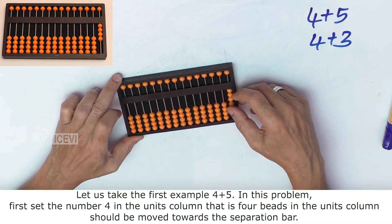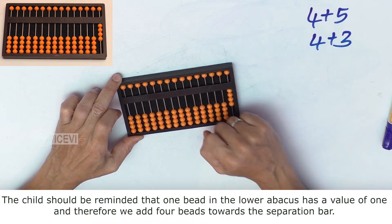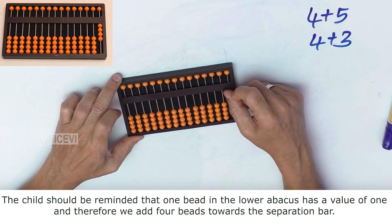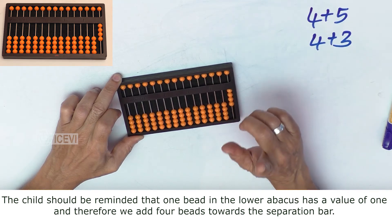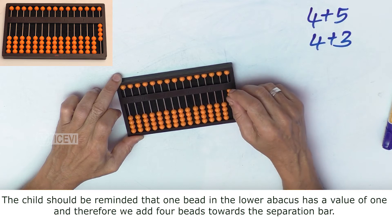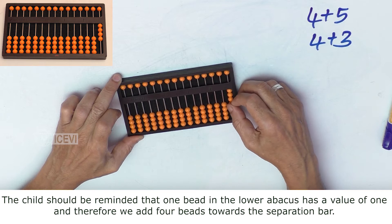should be moved towards the separation bar. The child should be reminded that one bead in the lower abacus has a value of 1, and therefore we add 4 beads towards the separation bar.